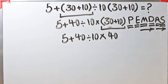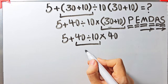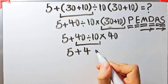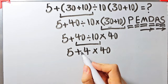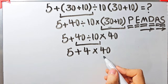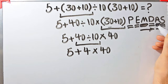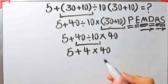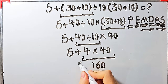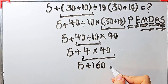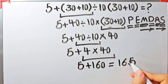First we simplify the division: 40 divided by 10 equals 4. Now the question is 5 plus 4 times 40. In this step we have addition and multiplication. We do the multiplication first because it has higher priority than addition: 4 times 40 equals 160. Now the question is 5 plus 160.